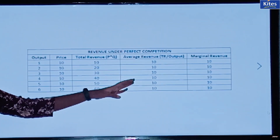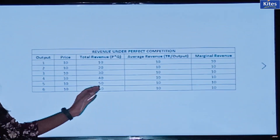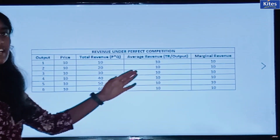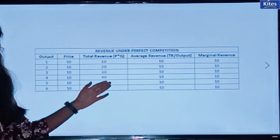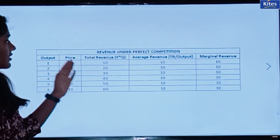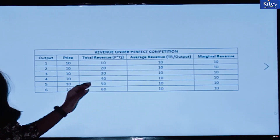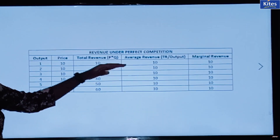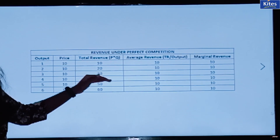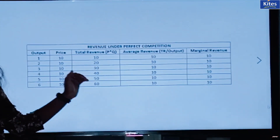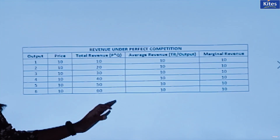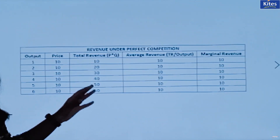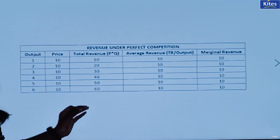Marginal revenue is the additional revenue made to the total revenue with the addition of one more unit of output. Here, 10 is 10; 20 minus 10 is 10; 30 minus 20 is 10, and so on — it will be 10 again. So if this table is depicted in the form of a graph, the graph would be like this.